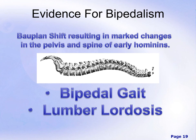Going over the evidence for bipedalism: there is a distinct body plan shift — 'body plan' being how our body is constructed — resulting in marked changes in the pelvis and spine of early hominids. We saw a change not only in the pelvis and spine, but also in the skull. We're going to talk about each of those changes in fine detail, including our bipedal gait, how humans walk on two legs, and lumbar lordosis — one of the interesting changes in the spine that became a fundamental adaptation allowing us to fully walk and run on two legs.